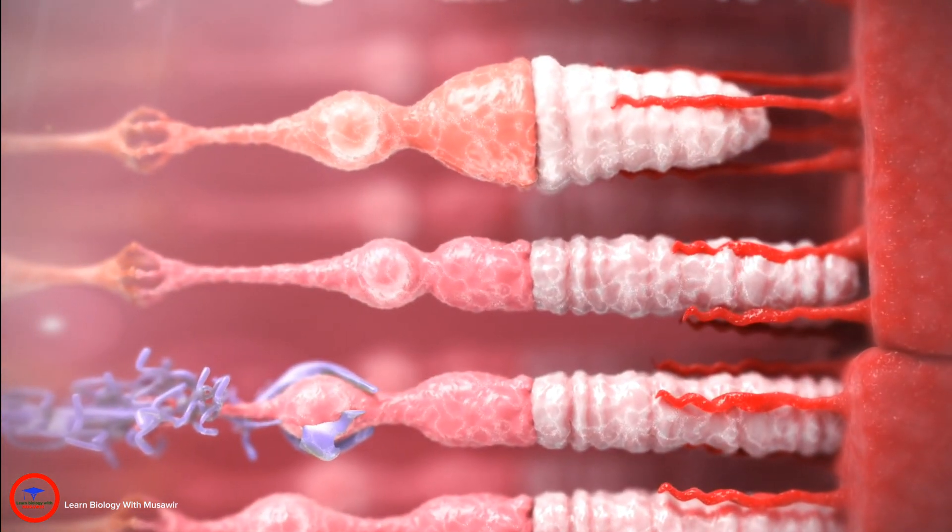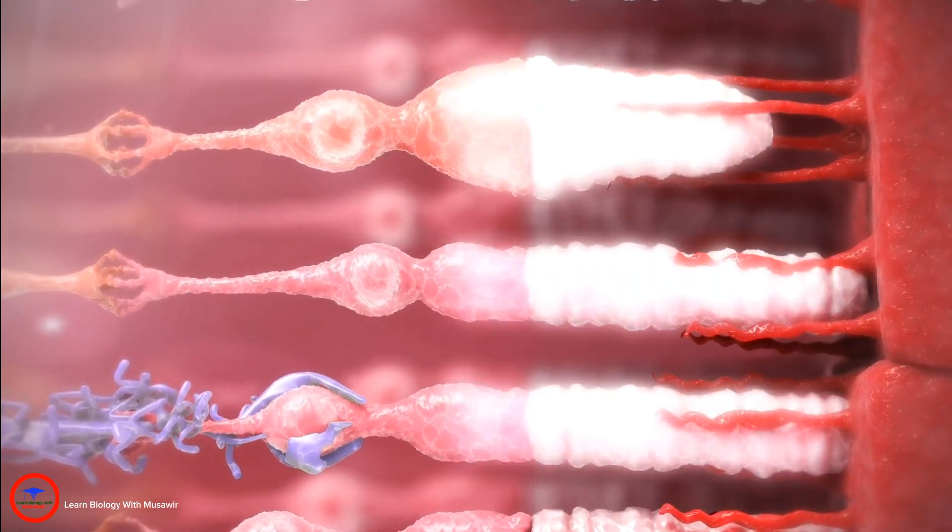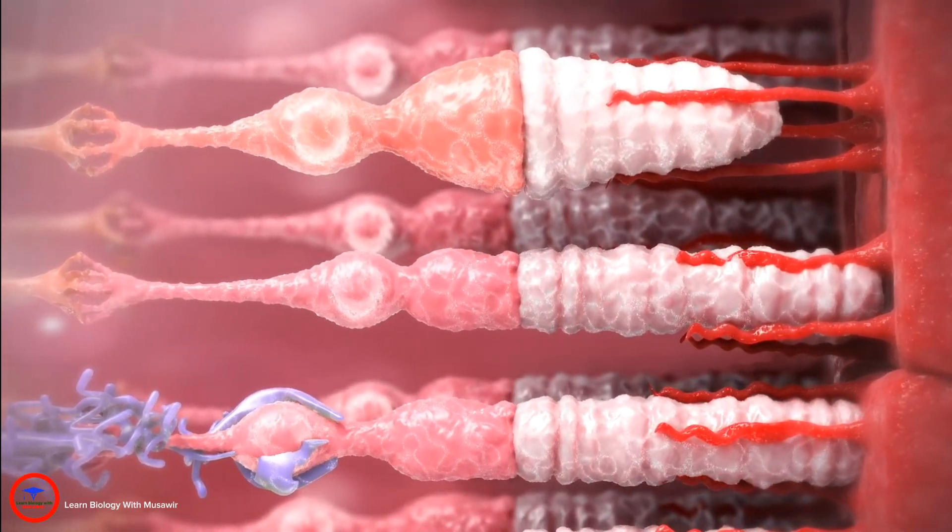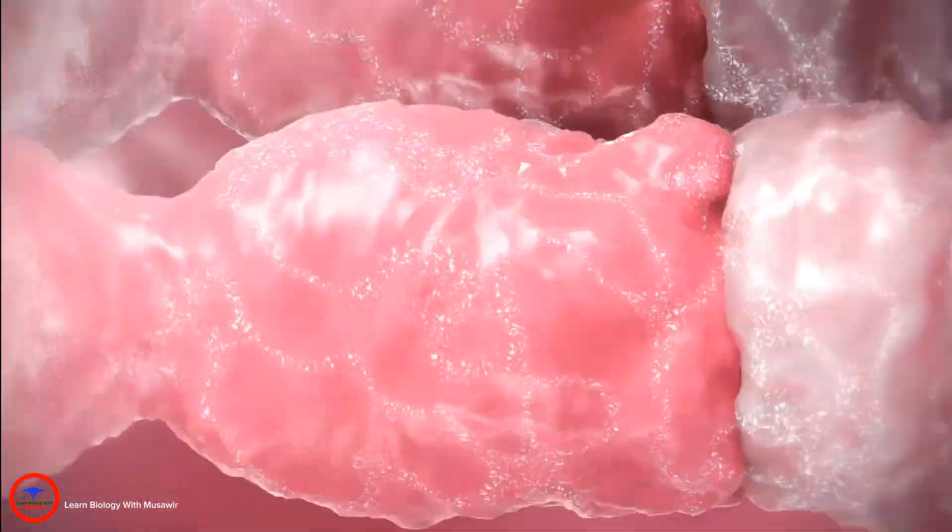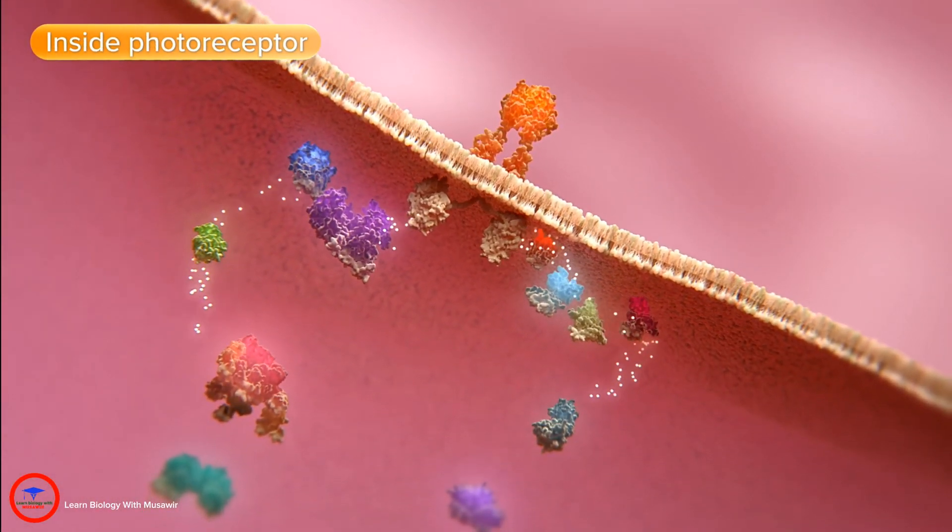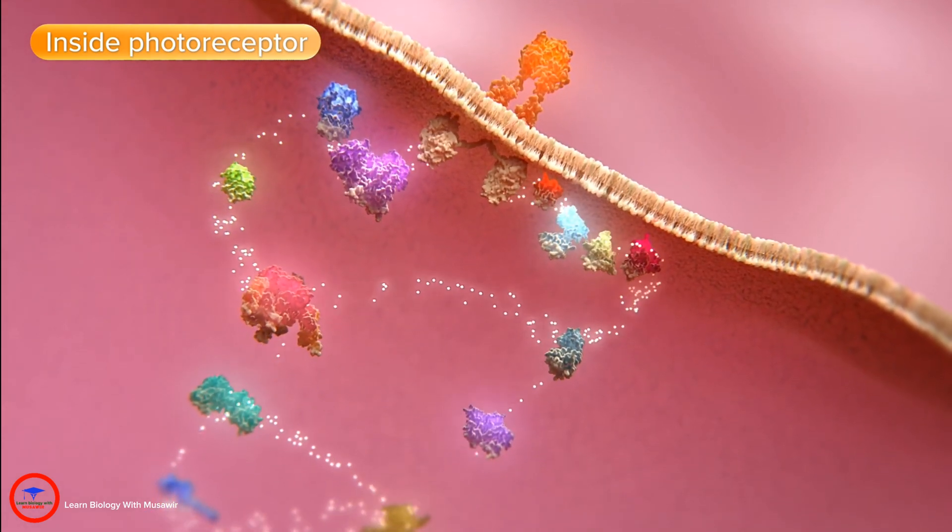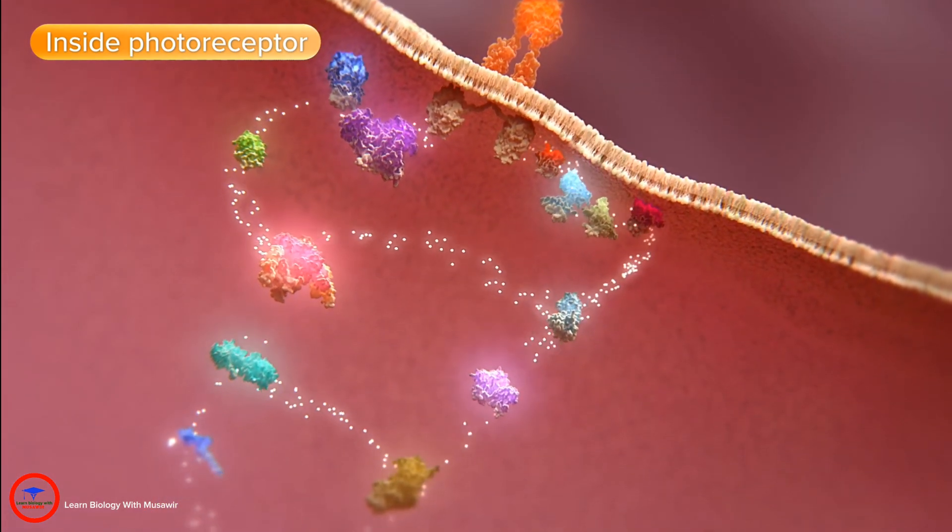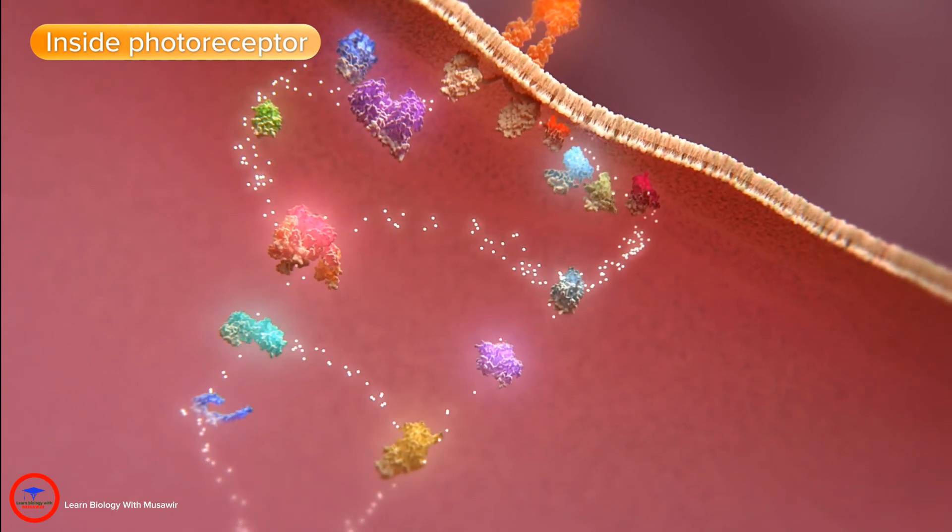Photoreceptors are amongst the most metabolically active cells in the body and insufficient nutrients can trigger metabolic stress. A homeostatic molecular pathway called mTOR detects low nutrient levels and reduces metabolic activity until sufficient nutrients become available.